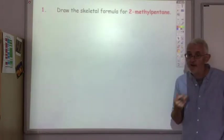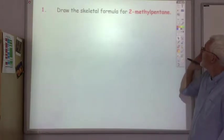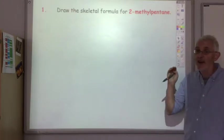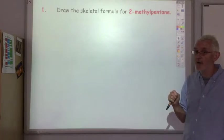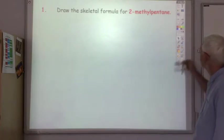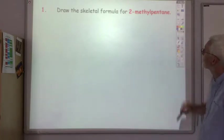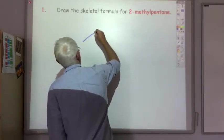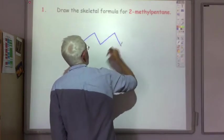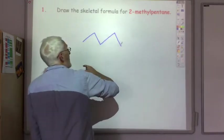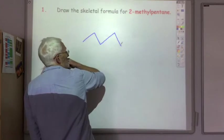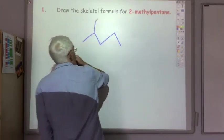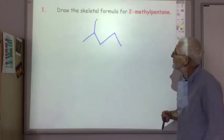Here are some more questions. This time I'll give you the name of the substance and you should draw the skeletal formula. 2-methylpentane: pentane has five carbons, one, two, three, four, five, and a methyl group on the second carbon. You could place the methyl either way — so there's 2-methylpentane.